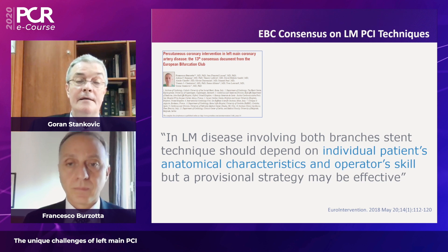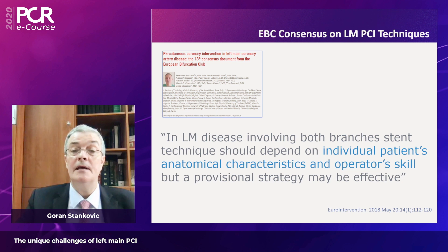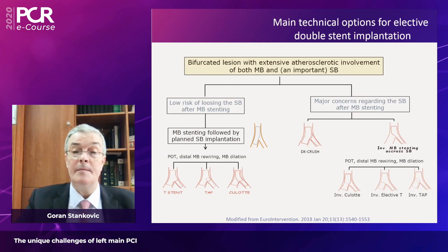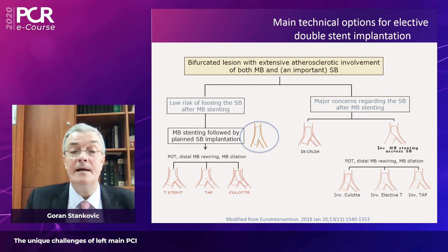This is the summary of recommendations from the latest European Bifurcation Club consensus document, for which Professor Burzotta was the leading author. The consensus concludes that in left main disease involving both branches, stenting techniques should depend on individual patient anatomical characteristics and operator skill. Provisional strategy may still be effective. The algorithm is based on estimated risk of losing the side branch: if there is no high risk of losing it, provisional strategy is the initial approach — stenting from the left main into the LAD, then performing POT, distal rewiring, main branch dilatation, and finalizing with T-stenting, TAP stenting, or culotte.